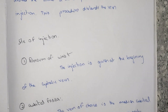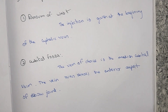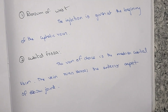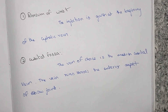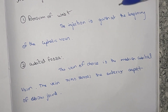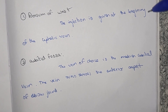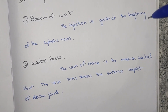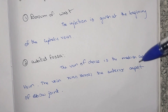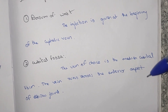There are three sites of injection: the dorsum of the wrist, the cubital fossa, and the saphenous vein. At the dorsum of the wrist, the injection is given at the beginning of the cephalic vein. The cubital fossa is the most commonly used injection site.